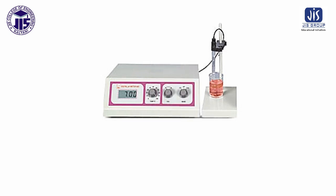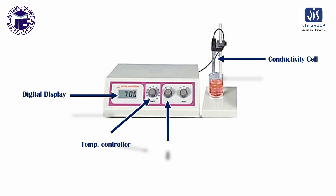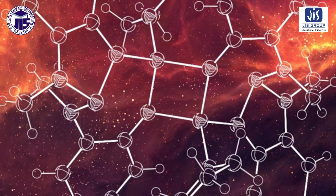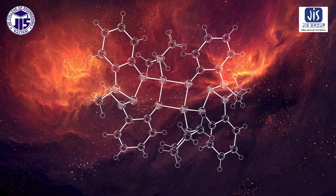This is the digital conductivity meter. The conductivity cell is immersed into the HCl and connected with the conductivity meter. On the digital display there are three knobs: on the left side is a temperature setting knob, in the middle is the mode selector, and on the right side is the range mode. Before starting the experiment, go to temperature mode and set the temperature, then set the mode to conductivity. To get the exact conductivity value, set the range key at the proper position — for our experiment, set it at the 2 mS range position.